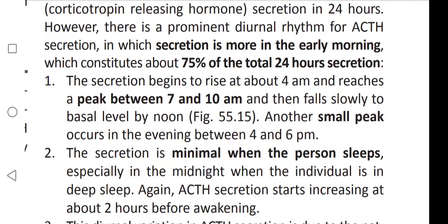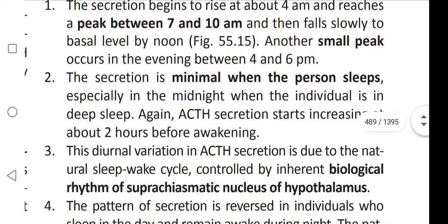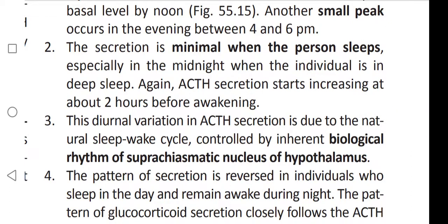After peaking between 7 and 10 AM, ACTH levels fall slowly to basal level by noon. A small peak occurs in the evening between 4 and 6 PM. Secretion is minimal when the person is asleep, especially at midnight. After awakening, ACTH secretion starts increasing again about two hours after waking up.